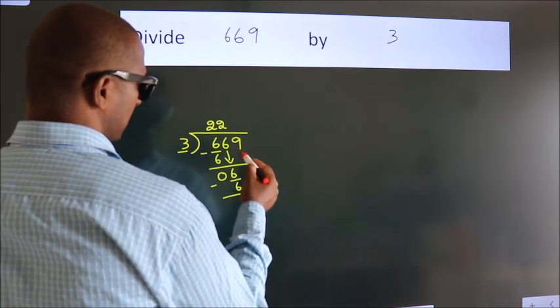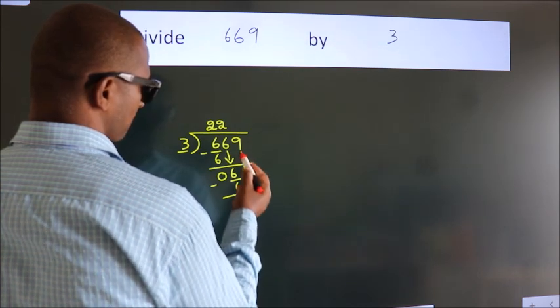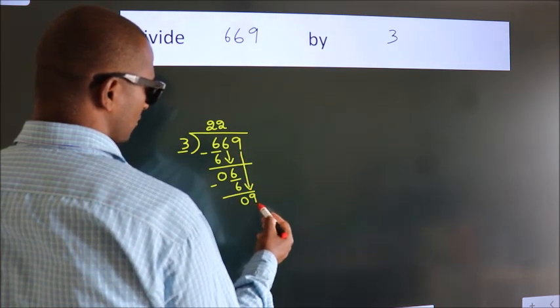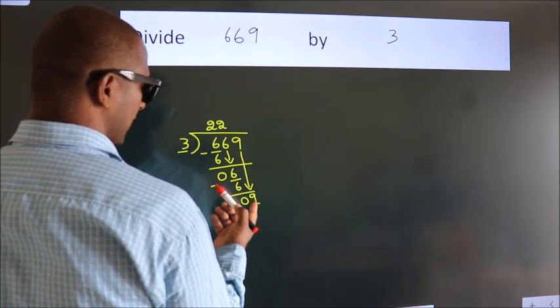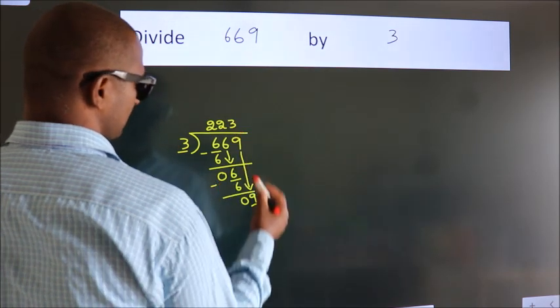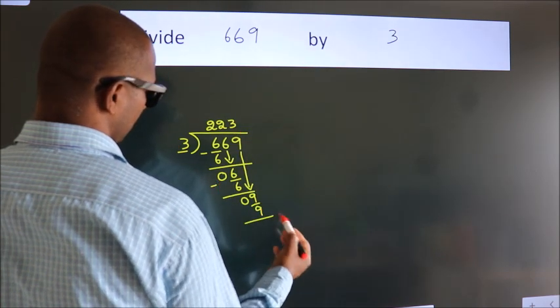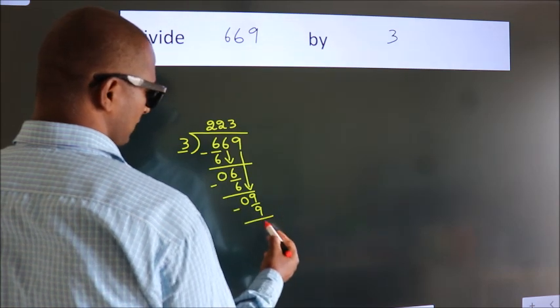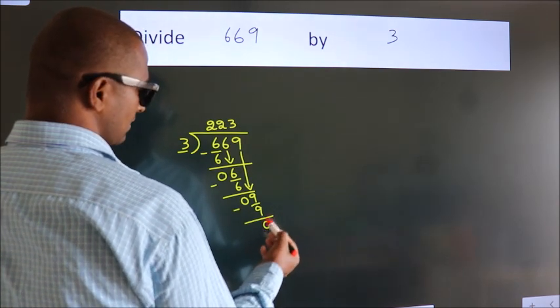After this, bring down the beside number, so 9 down, so 9. When do we get 9? In the 3 table, 3 times 3 is 9. Now we subtract, we get 0. After this,